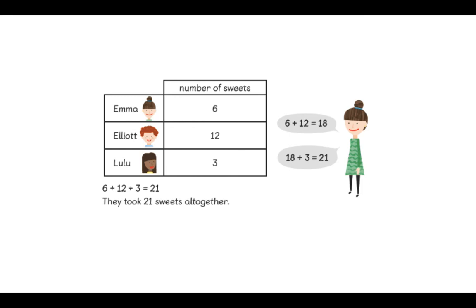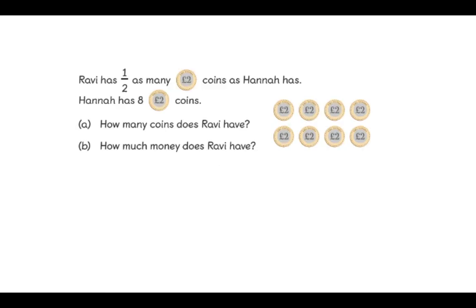I would now like you to have a go at a question yourself. Ravi has half as many two-pound coins as Hannah does. Hannah has eight two-pound coins. You need to work out how many coins does Ravi have and how much money does Ravi have. I'm going to give you a clue. We've got this word half. Can you remember what we do when we are halving an amount or halving a number? Maybe our friend from Maths No Problem could help you. Pause the video and see if you can find the answer to the two questions.